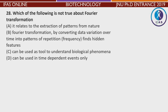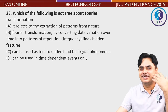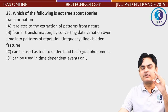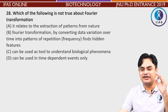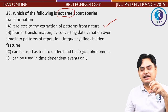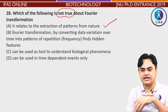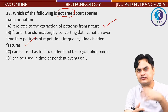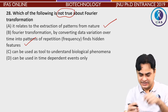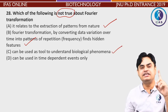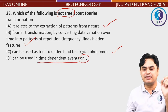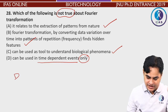Which of the following is NOT true about Fourier transformation? Option 1: 'It relates to extraction of pattern from nature' — this is correct. Option 2: 'Fourier transformation by converting data variation over time into a pattern of repetition finds hidden features' — this is also true. We studied that Fourier transformation is a mathematical modulation used to investigate biological phenomena from 3D structures. Option D: 'can be used in a time-dependent event only' — this is WRONG, because it can also be used in a time-independent manner. So the answer is D.